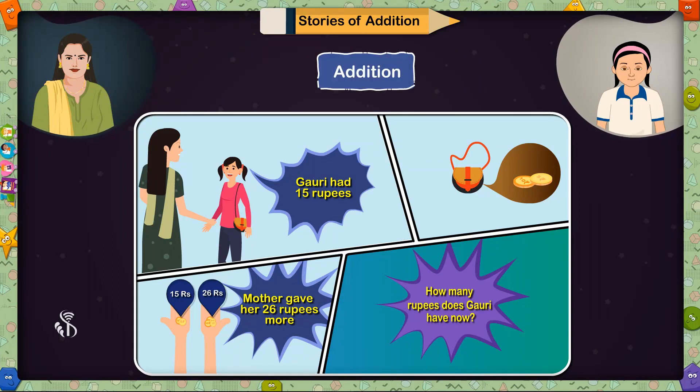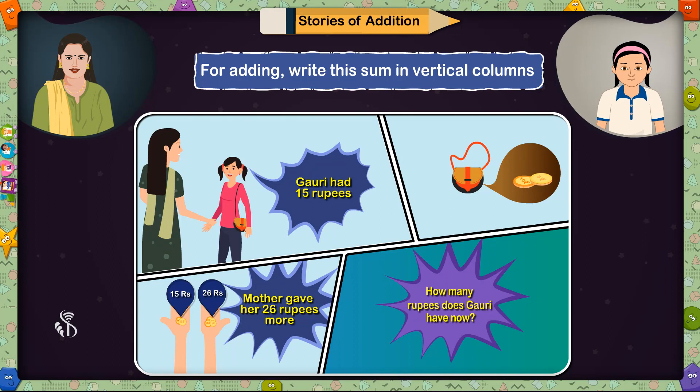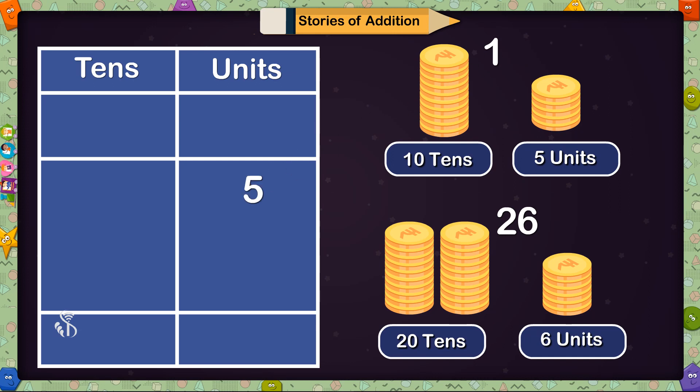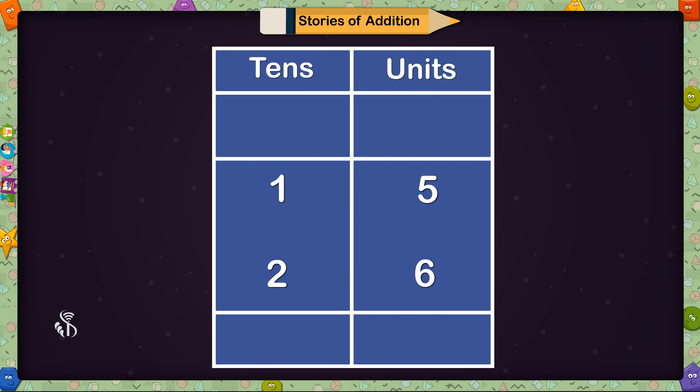Addition. Correct. For adding, we will first write this sum in vertical columns. From the number 15, we will write 5 in units place and 1 in tens place. Similarly, from 26, we will write 6 in units place and 2 in tens place and we will give a plus sign between them.